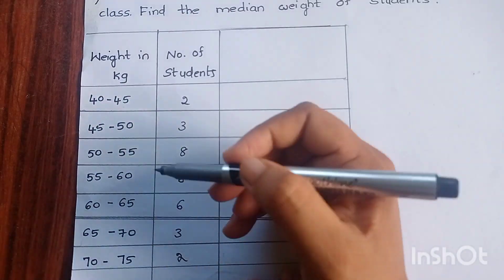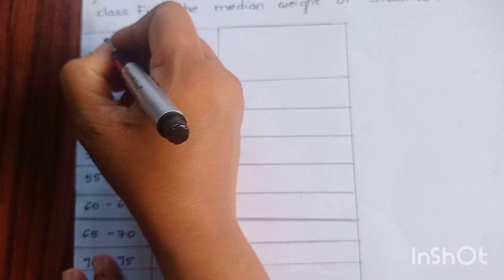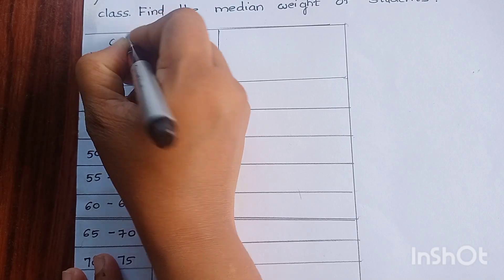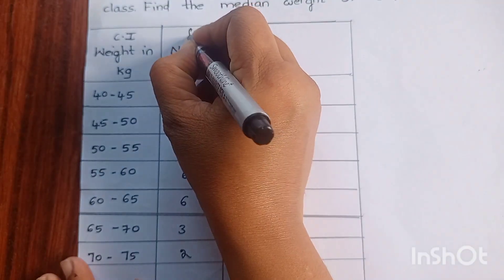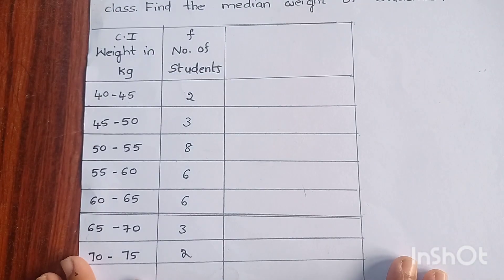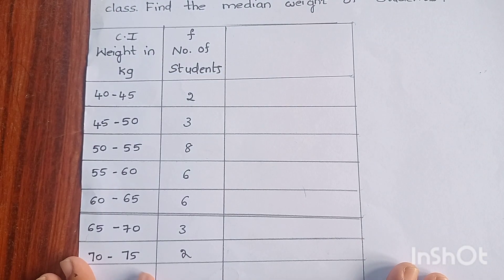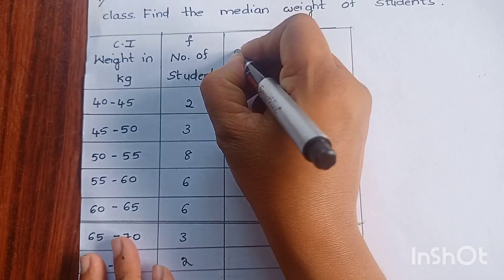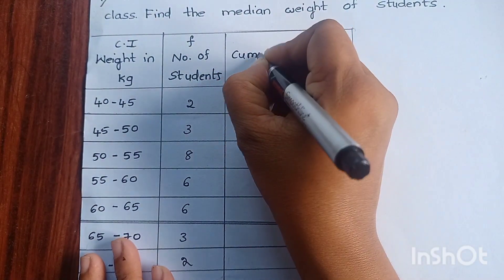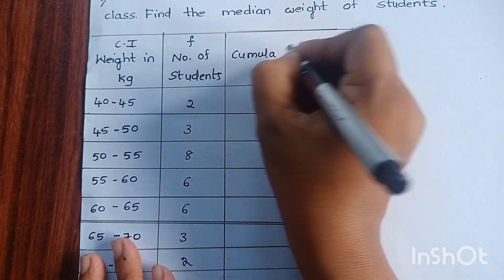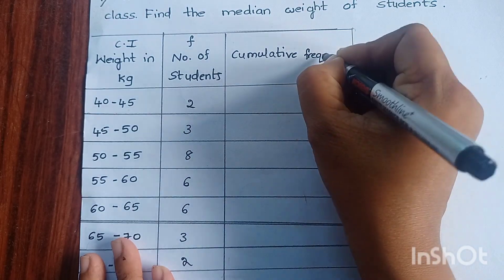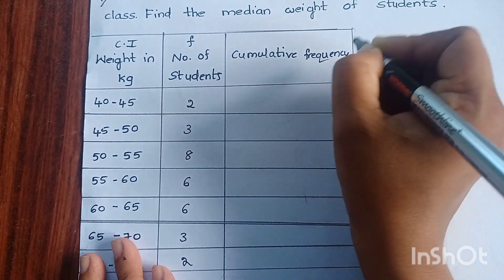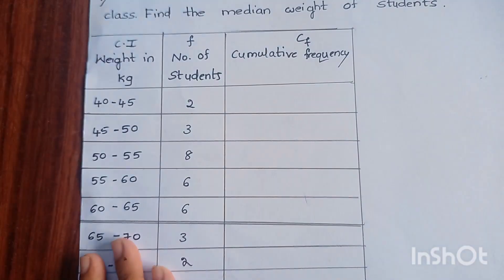Now here, we will represent the class interval as CL — that is the class interval table. And this is our frequency table, which we will represent as F. Now let us prepare the cumulative frequency table, which we will represent as CF.